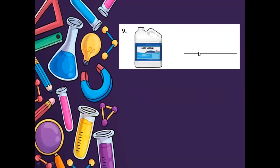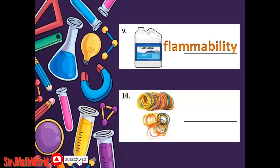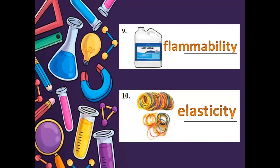Number nine, we have kerosene — for example, kerosene, gas, or alcohol. What property can we use to describe gas, kerosene, or alcohol? It's flammability — mabilis siyang mag-apoy. Number ten, rubber bands — what is the property used to describe rubber bands? It is elasticity — elastic, parang silastic — ito ay nababatak.